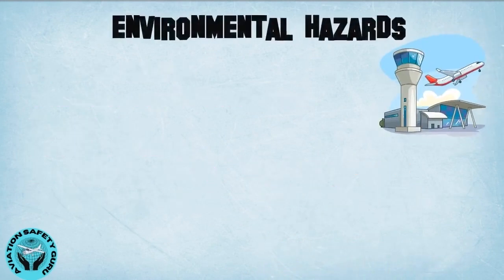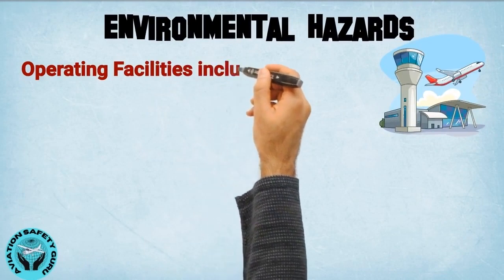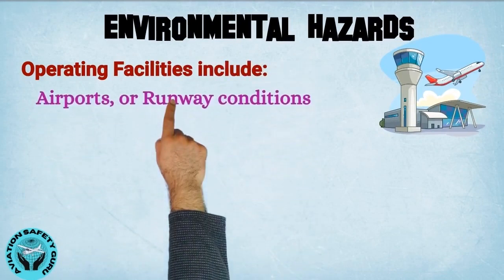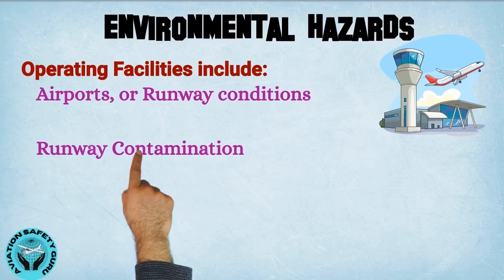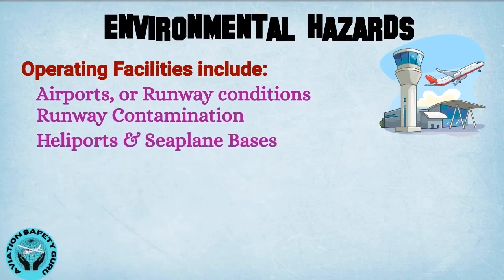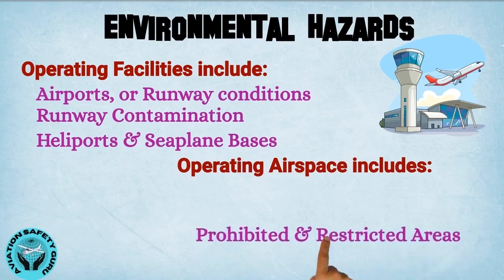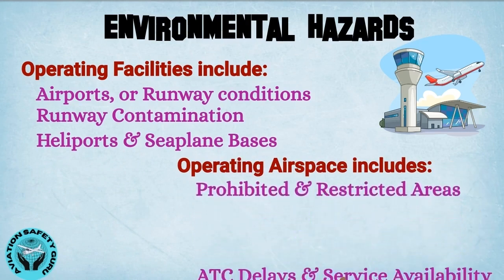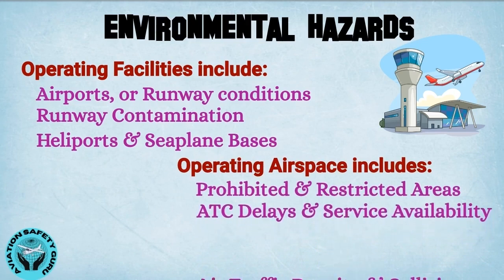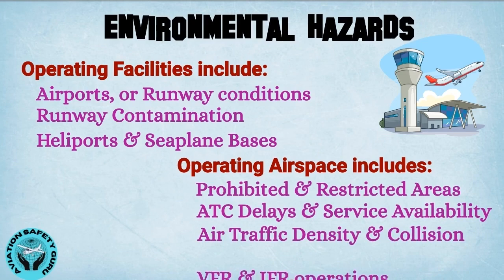In man-made environmental hazards, operating facilities include airports and runway conditions, runway contamination, heliports and seaplane bases. Operating airspace includes prohibited and restricted areas, ATC delays and service availability, air traffic density and collision risk, and VFR and IFR operations.